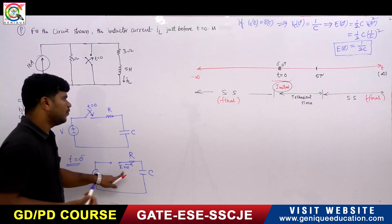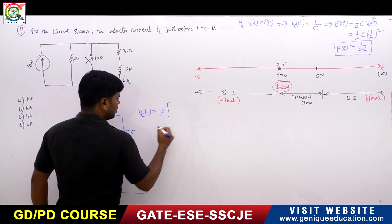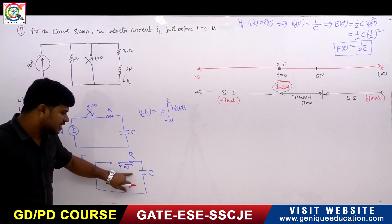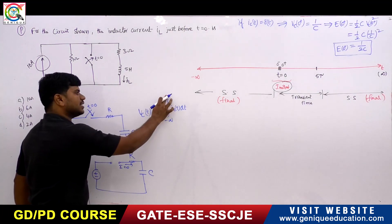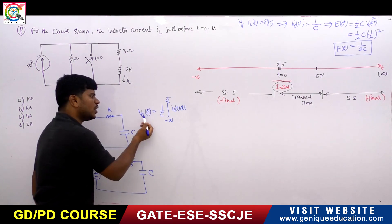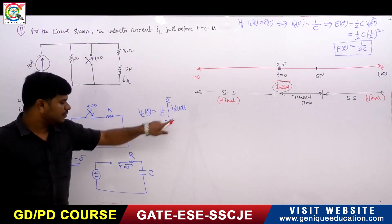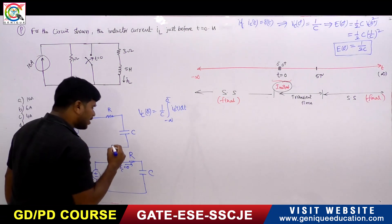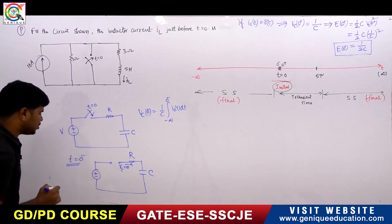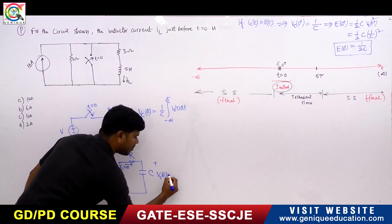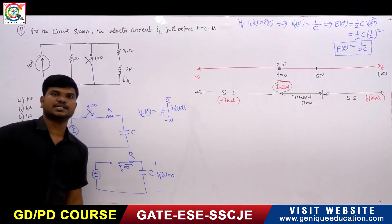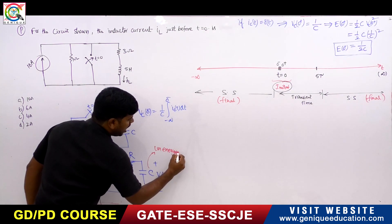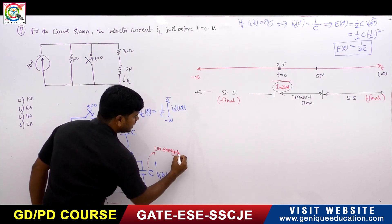If IC equals 0, what is VC(T)? We know VC(T) equals (1/C) integral from minus infinity to T of IC(T) dt. The current through the capacitor is 0. At T equals 0 minus, the voltage across the capacitor is 0 because IC(T) equals 0. So VC(0 minus) equals 0. This kind of capacitor is called the unenergized capacitor — until the switching, the capacitor was not energized.